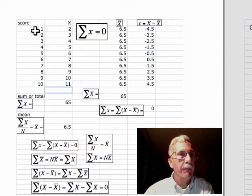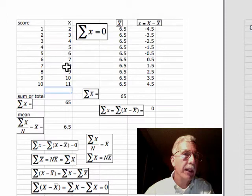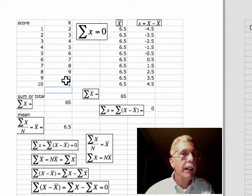So I have 10 scores here: 1, 2, 3, 4, 5, 6, 7, 8, 9, 10. The values of these scores are 2, 3, 4, 5, 6, 7, 8, 9, 10, 11.